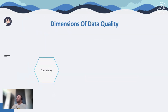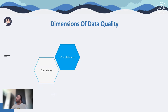Let's dive into the dimensions of data quality. The first one is consistency — data values in one dataset being consistent with values in another dataset. A strict definition specifies that two data values drawn from separate datasets must not conflict with each other. The second is completeness — data is considered complete when all the data required for a particular use is present and available. It is not about ensuring 100% of your data fields are complete, but about determining what data is critical and what is optional.